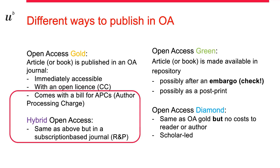The other possibility is the gold road with its variants diamond and hybrid open access. Gold open access means that the article is published in an open access journal and therefore is immediately accessible. Gold open access publishing comes with a bill for APCs, the author processing charges. The hybrid open access option means that a subscription journal gives free access to individual articles if the authors pay an APC, while the rest of the issue stays behind the paywall. The diamond road is gold open access without APCs — diamond journals are financed on community-based models, so neither author nor reader has to pay.